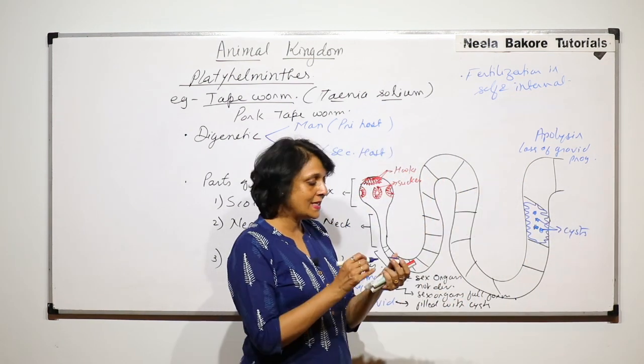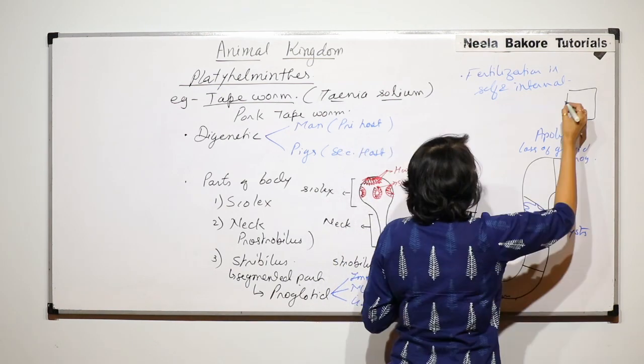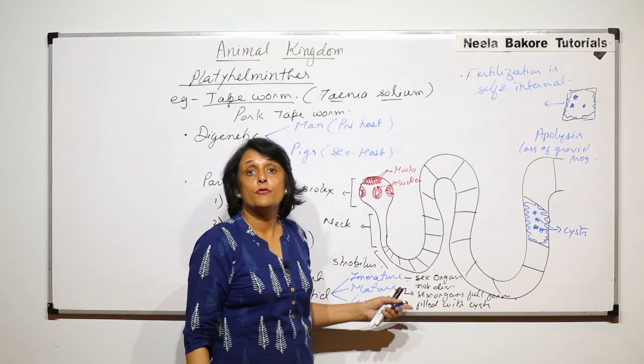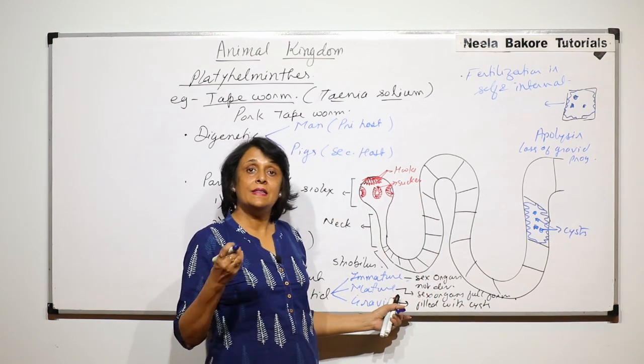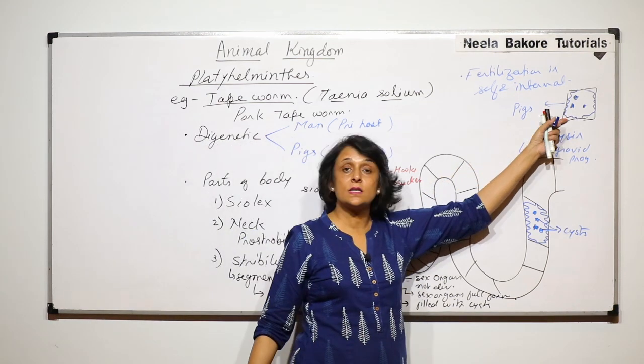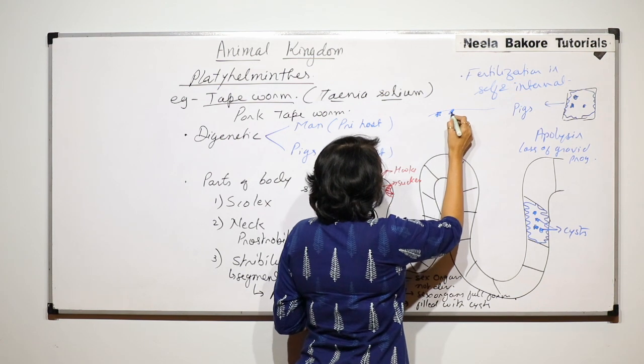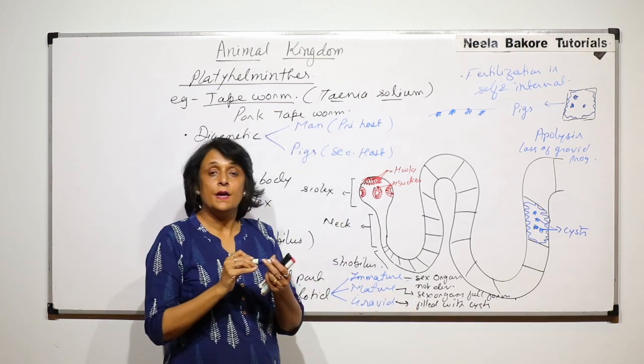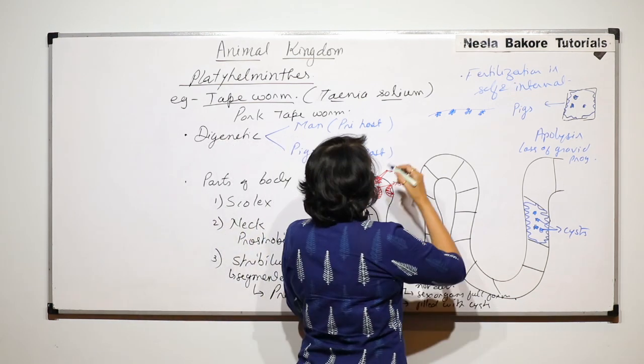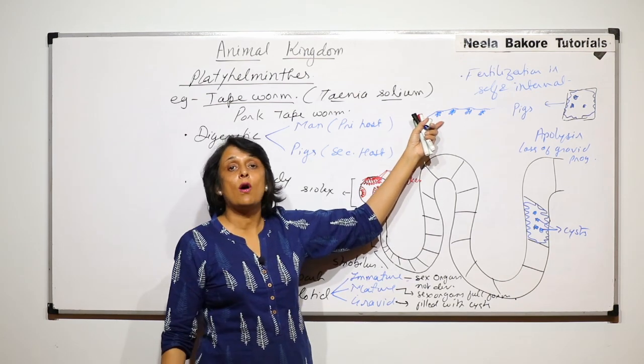Now due to this apolysis the segments are lost. Suppose this is the segment which is detached, and in this there is a gravid proglotid. In this there is this uterus which is highly branched and there are only cysts. Now this is lost from our body along with fecal matter. When this fecal matter is consumed by pigs it enters the pig's body. Here the cysts come out of the segment and these cysts they get deposited under the muscular surface or in the muscle just closer to the surface. If there is some structure which is just underneath the surface, we would find that wherever that cyst is there is a little bumpy part.